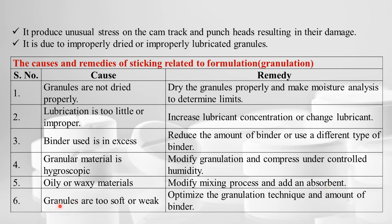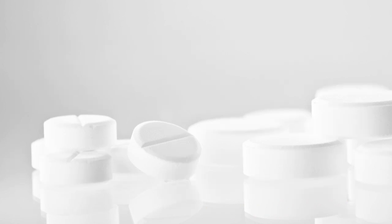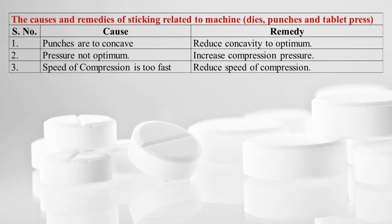If granular material is hygroscopic and absorbs moisture, modify the granulation and compress under controlled humidity. When oily or waxy materials are used, modify the mixing process and add an absorbent. If granules are too soft or weak, optimize the granulation technique and the amount of binder.